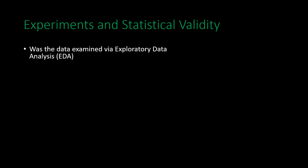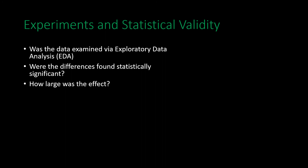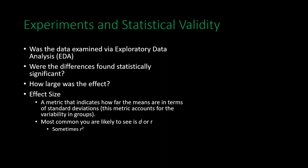When it comes to experiments and statistical validity, one can ask whether data was examined via exploratory data analysis before any inferential statistics were conducted, and whether assumptions before conducting statistical tests were controlled for. Were the differences found statistically significant, and how large were the effects? Effect size refers to a metric indicating how far means are in terms of standard deviations — it accounts not only for the distance between two means but also the variability of the two groups. Common forms of effect size include Cohen's d and r (correlation coefficient), as well as r-squared, which represents the shared variance between two variables.